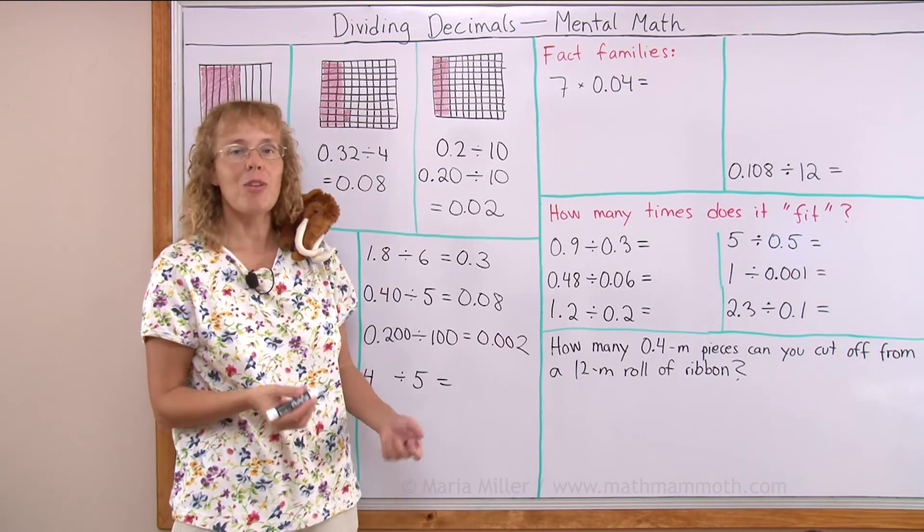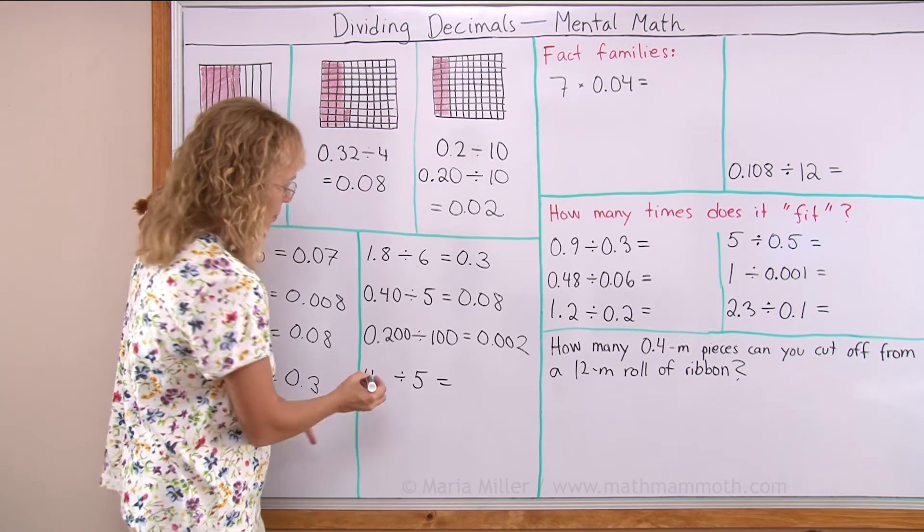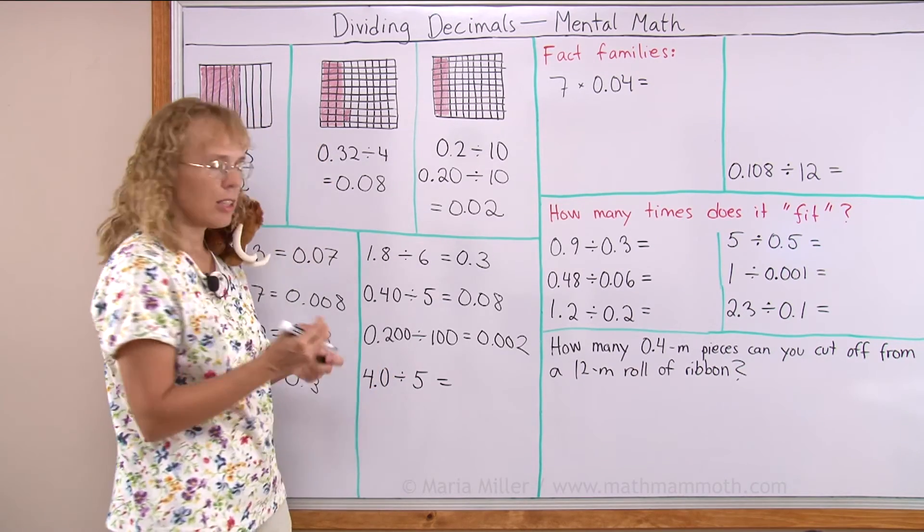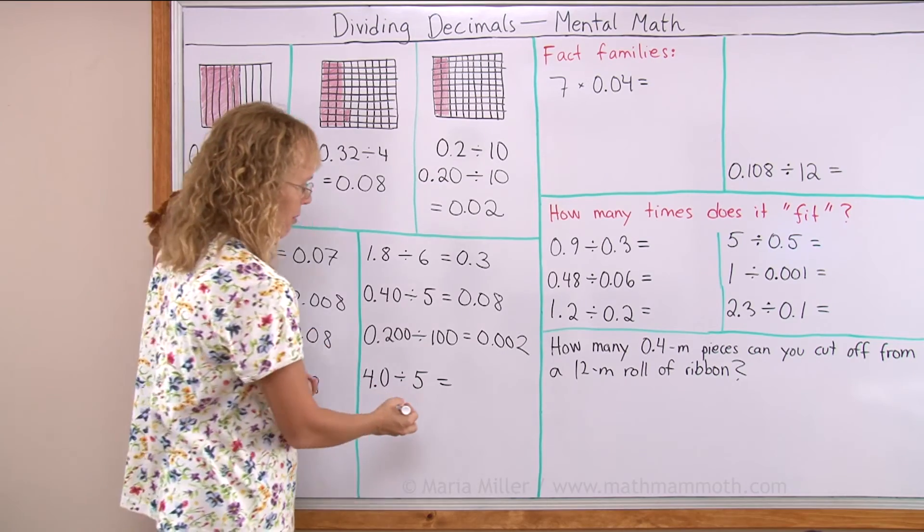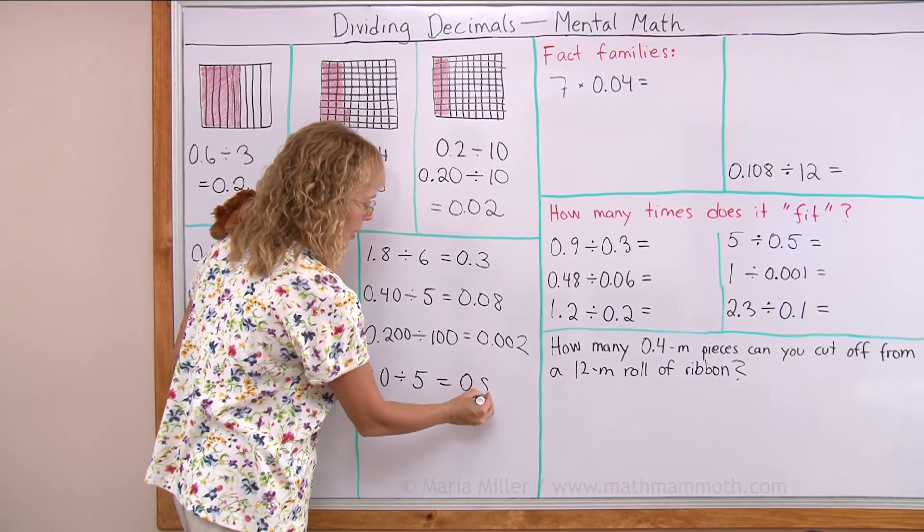And one more. Four divided by five. Well, again, let me think in tenths and make it into forty tenths divided by five. Mine should be eight tenths.